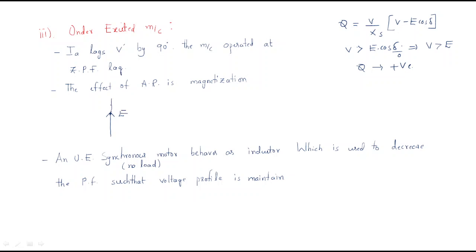The E value is low compared with terminal voltage V. The armature current Ia combined with j·Ia·Xs gives the phasor relationship. The armature current lags the voltage by 90 degrees. The machine operates at zero power factor lagging, while the over-excited machine operates at zero power factor leading.